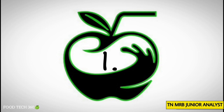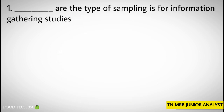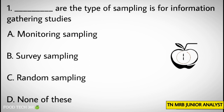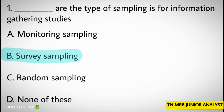Question number 1. Dash, or which type of sampling is for information gathering studies? Options: A. Monitoring sampling, B. Survey sampling, C. Random sampling, D. None of these. Correct answer: B. Survey sampling.